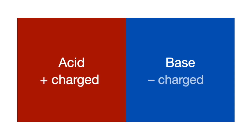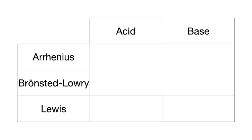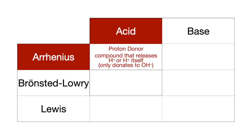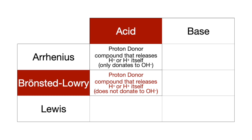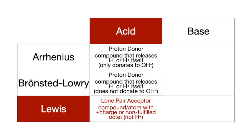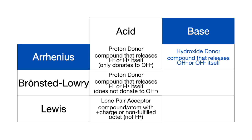Acids and bases are electrolytes. Acids are generally positively charged atoms or molecules and bases are generally negatively charged atoms or molecules. There are three types of acids and bases: Arrhenius, Bronsted-Lowry, and Lewis. Arrhenius acids are proton donors meaning they release H+ and only donate to hydroxides. Bronsted-Lowry acids are also proton donors and they release H+ but they do not donate to hydroxide. Lewis acids are lone pair acceptors, which means compounds or atoms with positive charges or non-fulfilled octets.